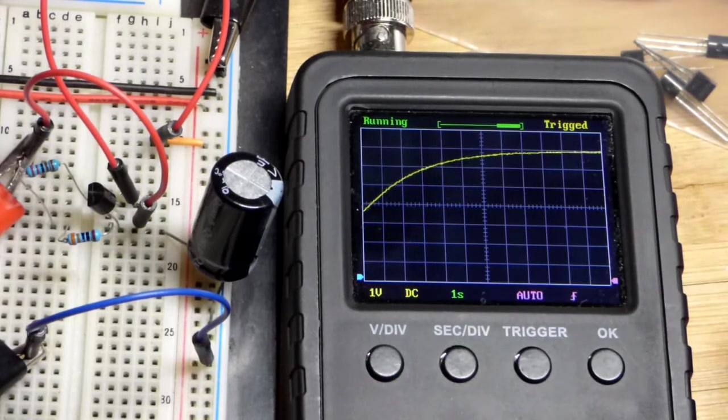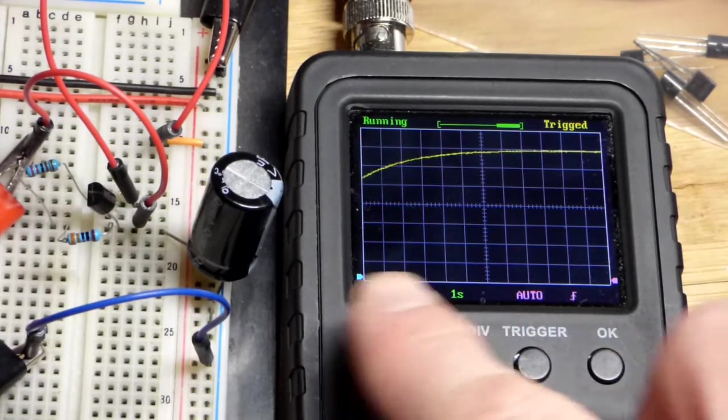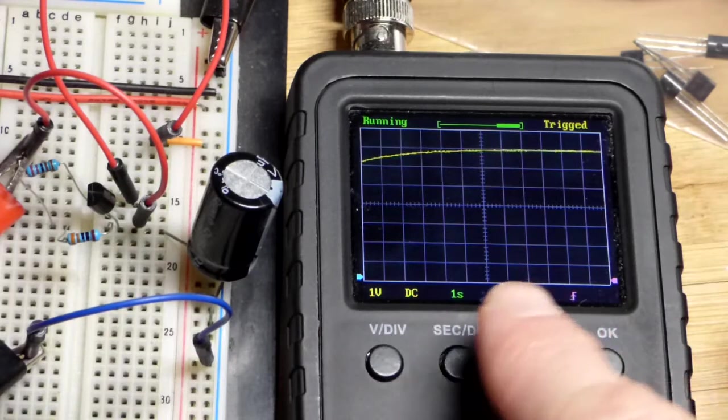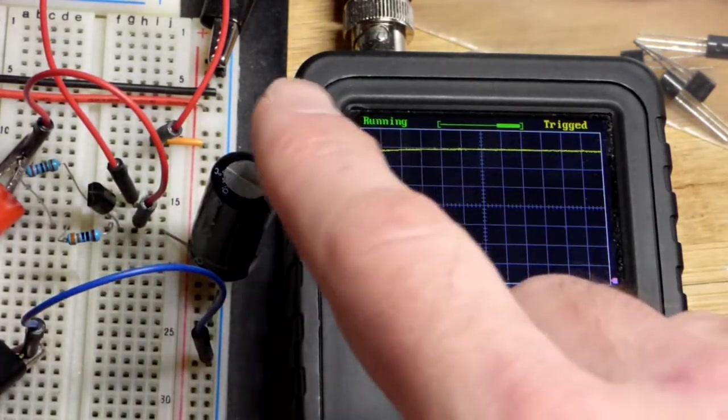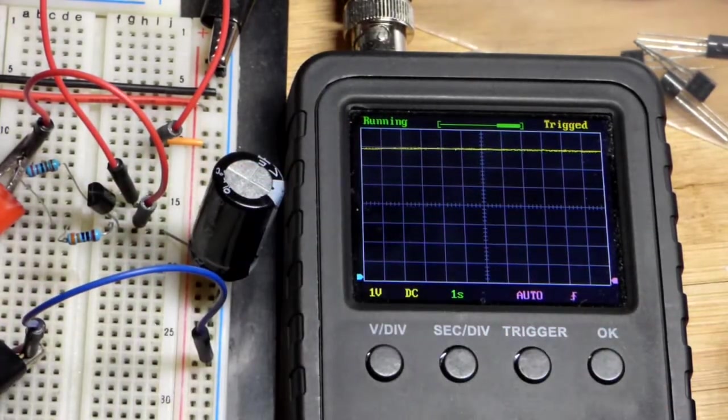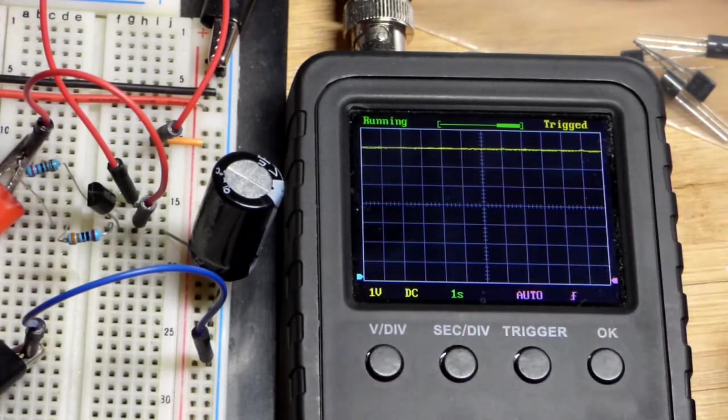We saw before that current held really steady and then started going down, so you do see a curve there. But the main thing was, while we had enough supply voltage to power the transistor and charge the capacitor, we got a steady rise in voltage.